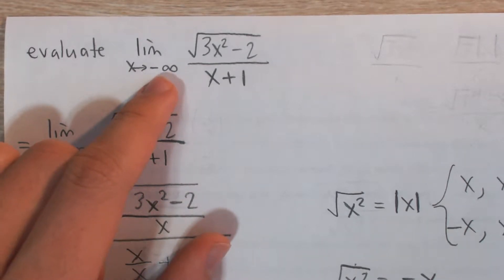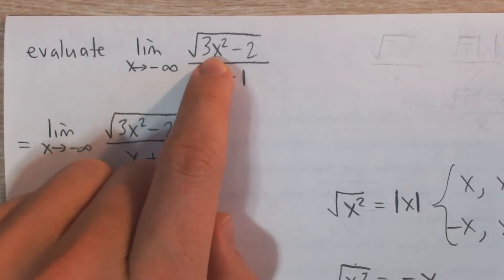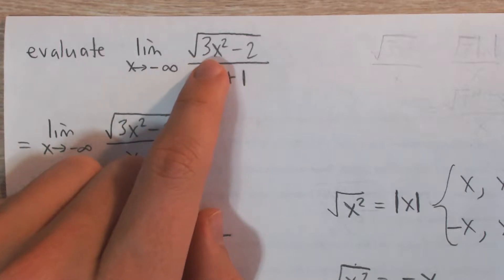We're plugging in a very large negative number and so we're going to get a very large positive number squared in the numerator and then we're going to take the square root of that. So it's kind of like that canceling out the square, right?